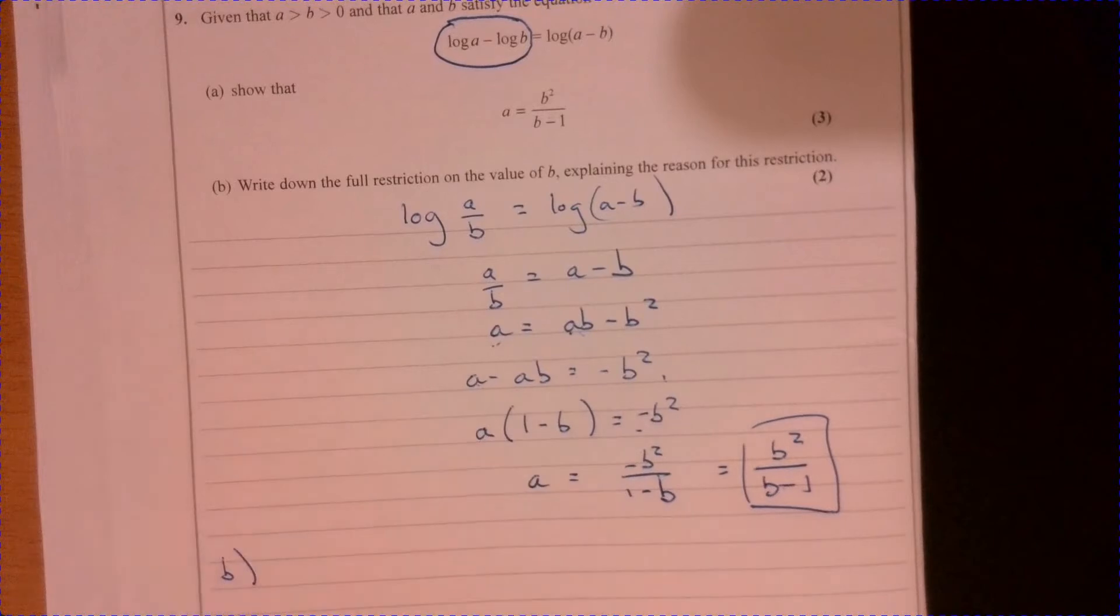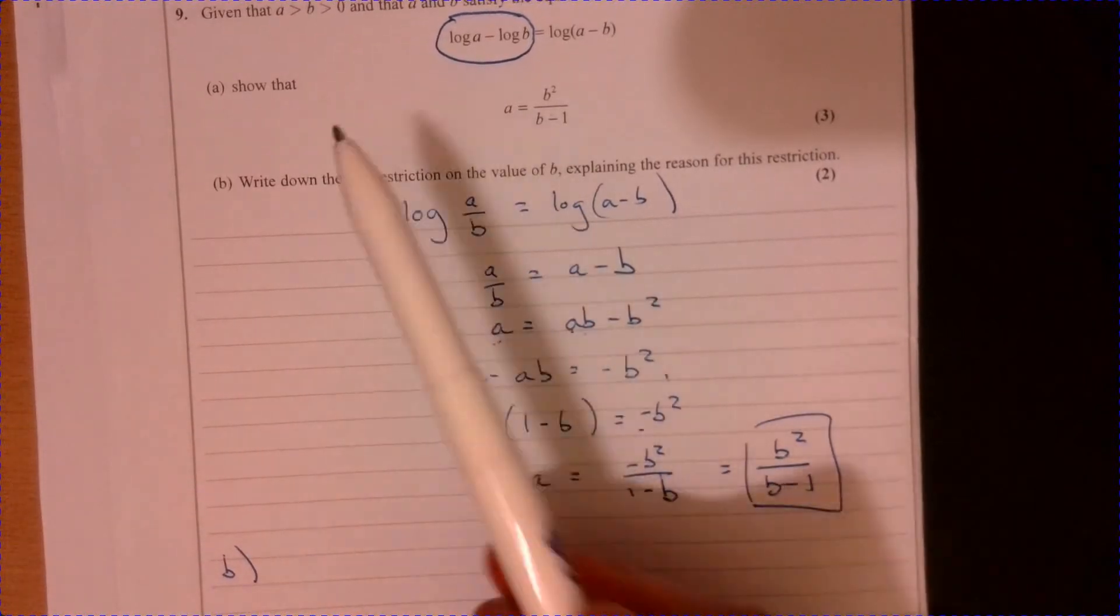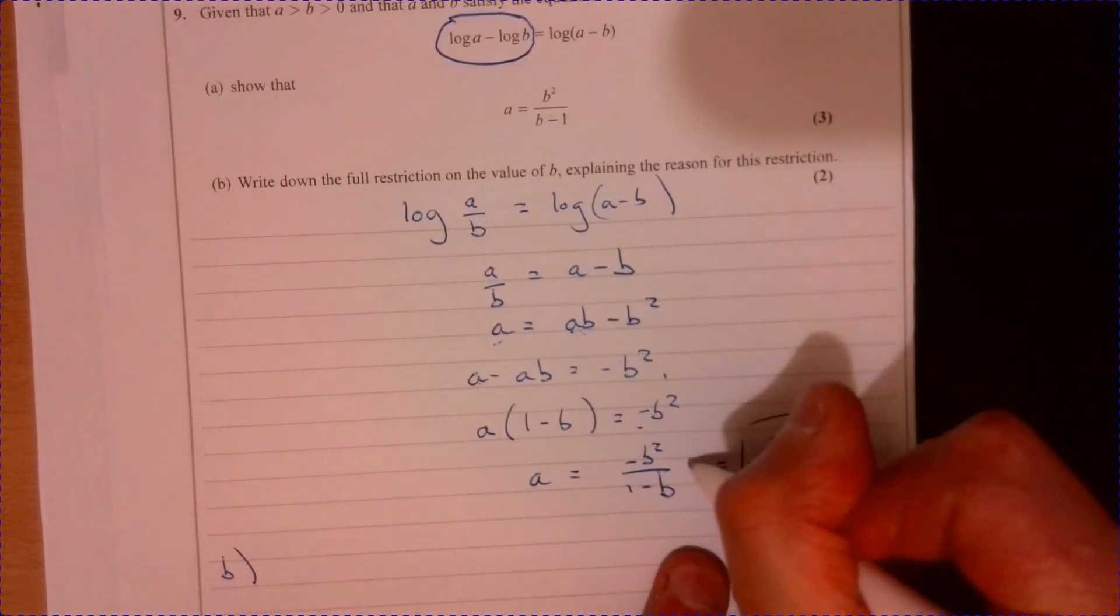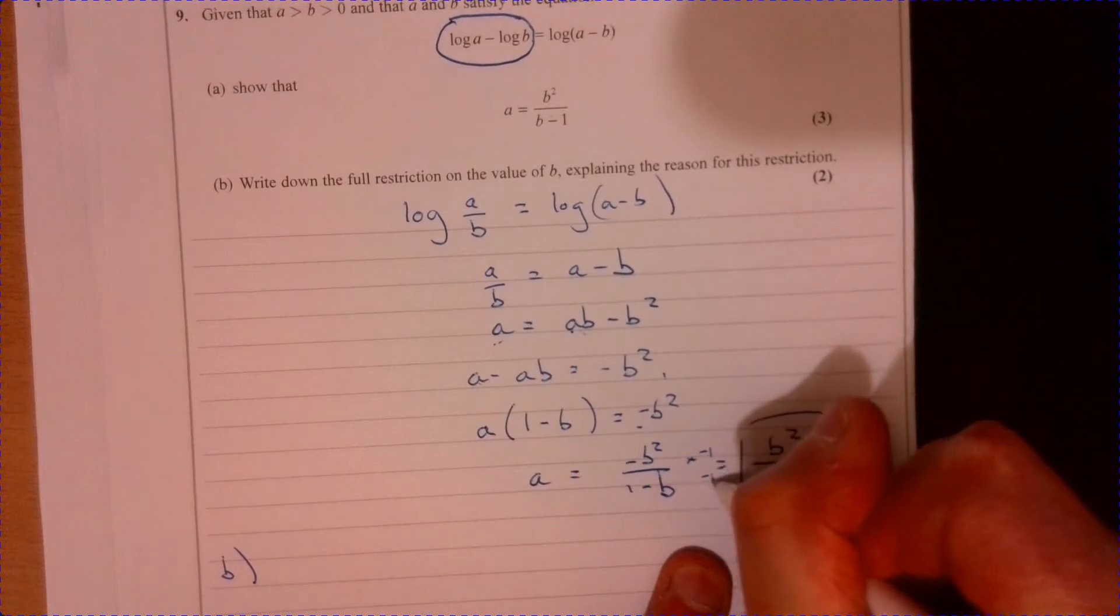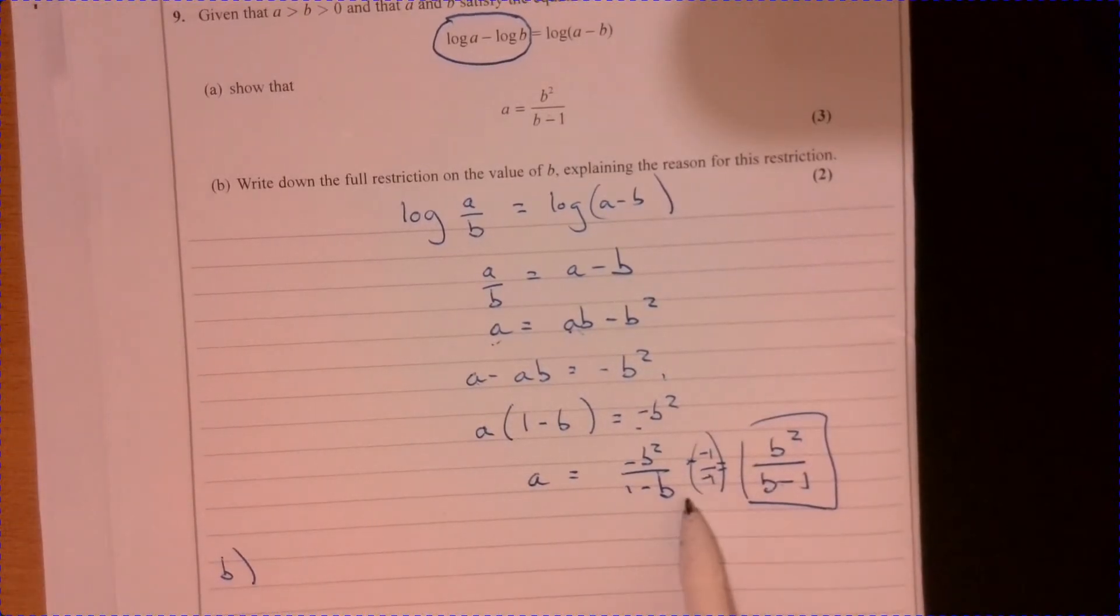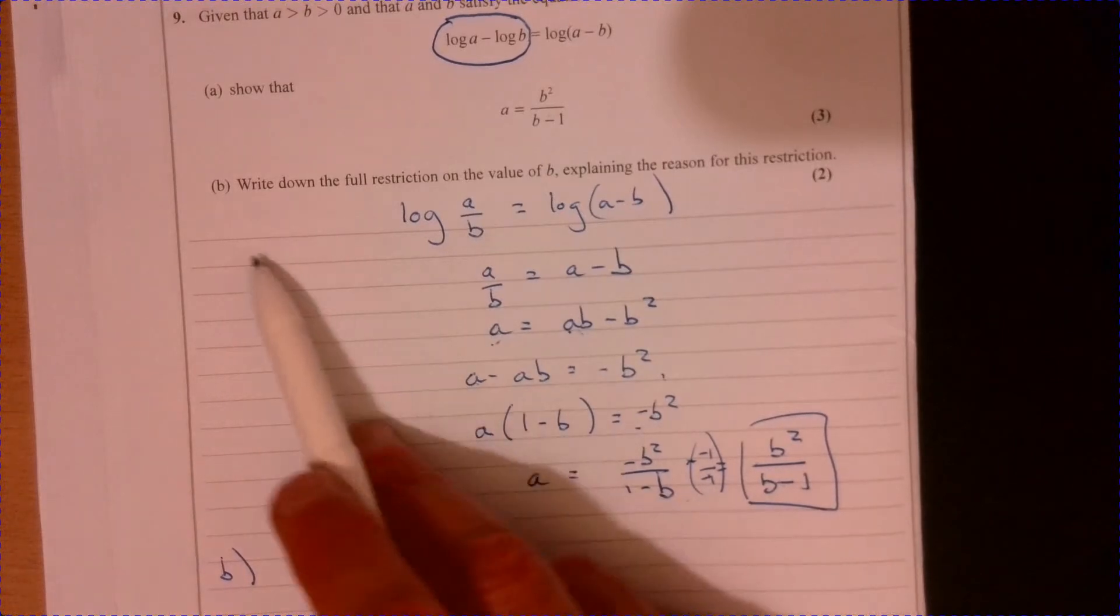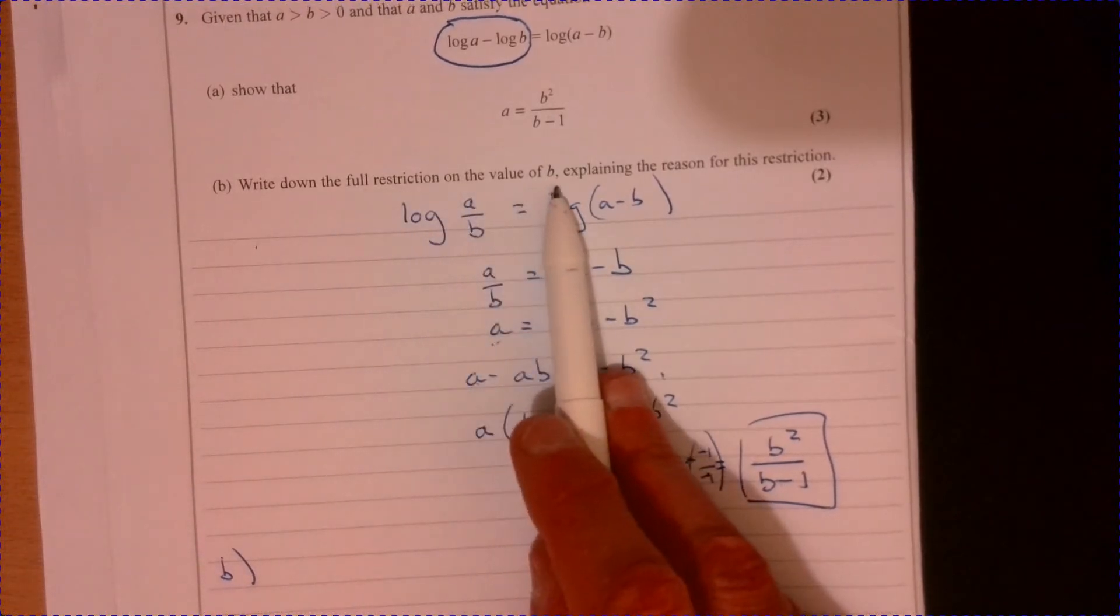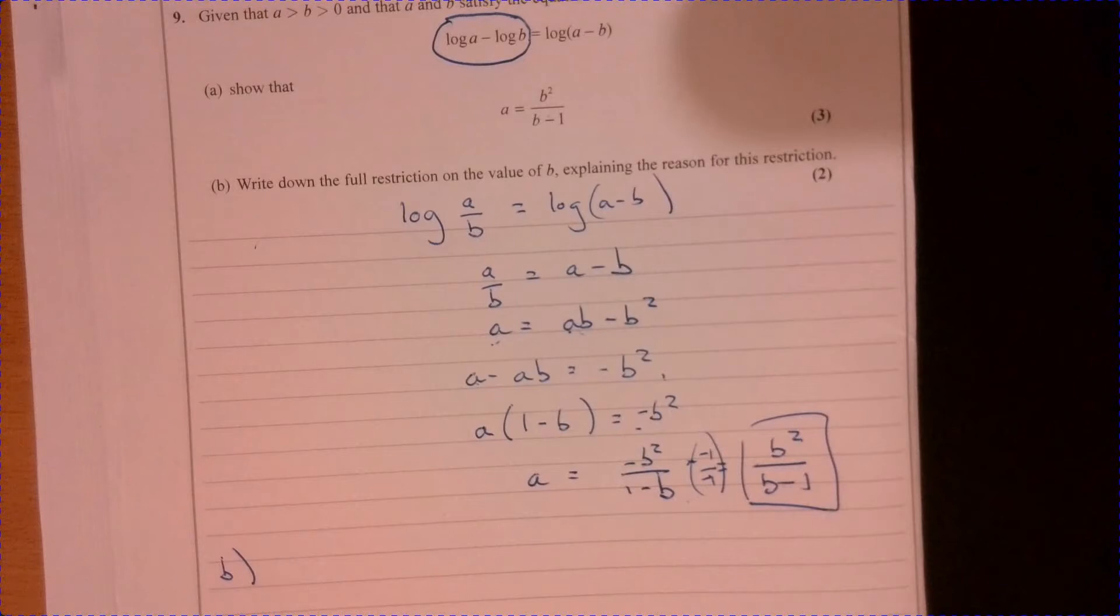Write down the full restriction. I might just show there, actually, that I've just multiplied top and bottom by minus 1. As it was to show that question. Right. Write down the full restriction of the value of B, explaining the reasons for this restriction. Well,